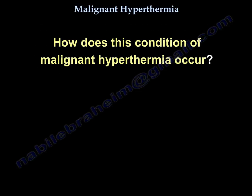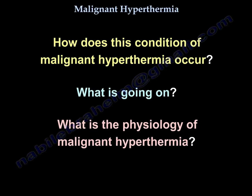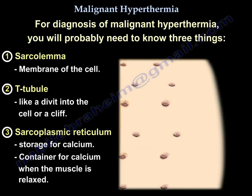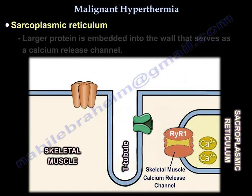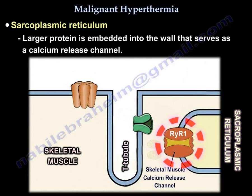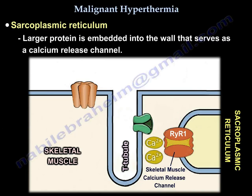To understand the physiology, you need to know three things: the sarcoplasmic reticulum, which stores calcium when the muscle is relaxed; the T-tubule, which is like a cleft or divot into the cell; and the large protein embedded in the wall of the sarcoplasmic reticulum that serves as a calcium release channel.